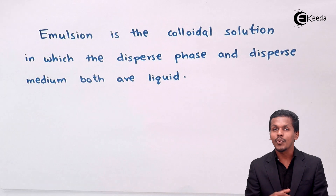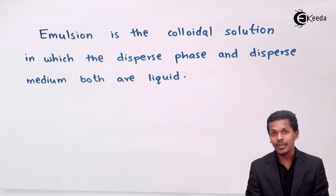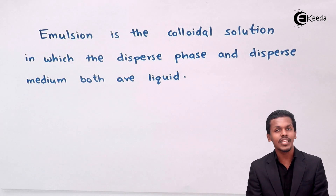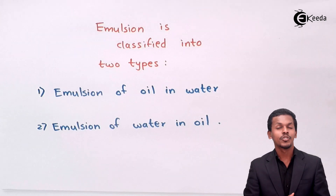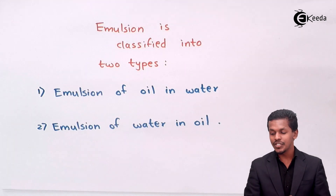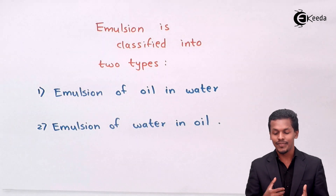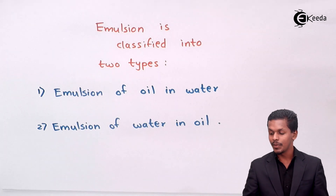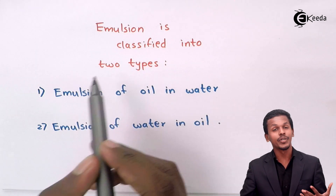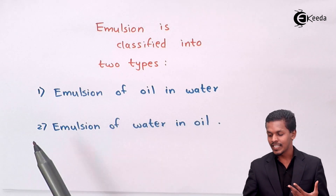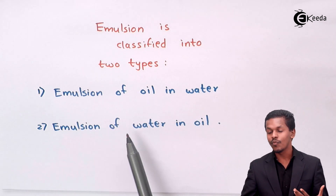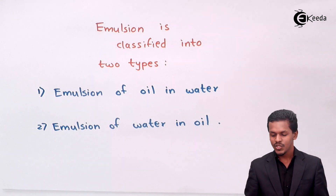Now let us talk about the classification of emulsion. Emulsion is classified into two types: the first is emulsion of oil in water, and the second is emulsion of water in oil.